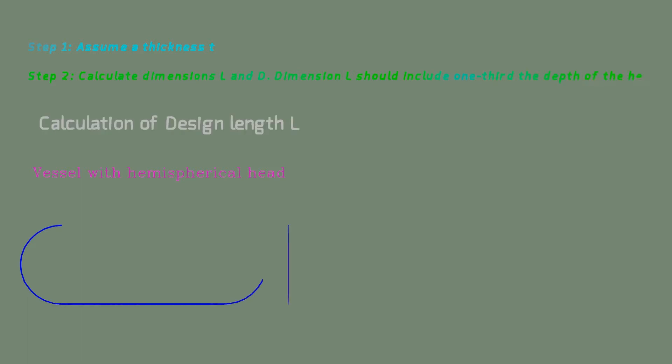In step one, we assume a thickness T — any value such as 5, 10, 15, or 20 mm can be assumed at the start. In the next step, we calculate dimensions L and D, where L is the design length and D is the inside diameter. The dimension L should include one-third the depth of the heads, which is important for all vessel types.